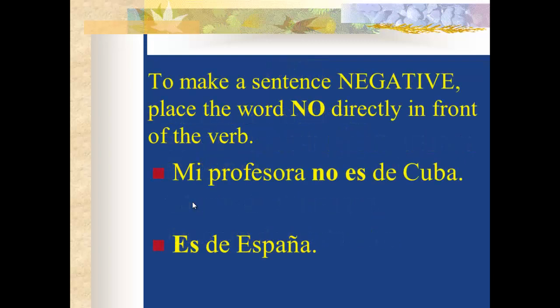To make a sentence negative, you place the word no directly in front of the verb. So: mi profesora no es de Cuba — my teacher is not from Cuba. Notice I don't say es no de Cuba — it's no es de Cuba. Even though it translates to 'is not from,' you also say no es de España — he or she is not from Spain.